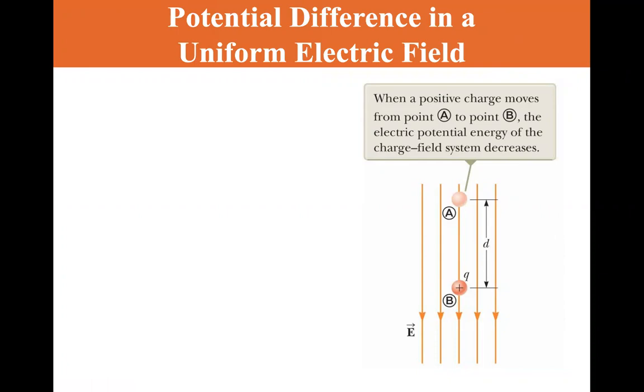They have the electric field going downwards, and they're doing that on purpose, because we're going to liken this to the gravitational equivalent. So here we have the electric field going down, and we have a positive particle in this electric field.